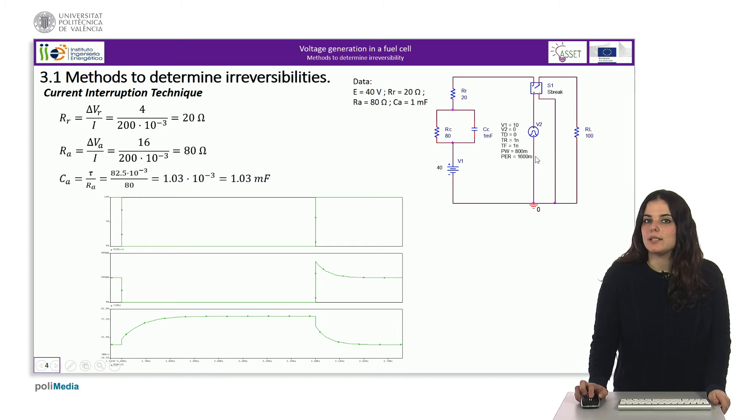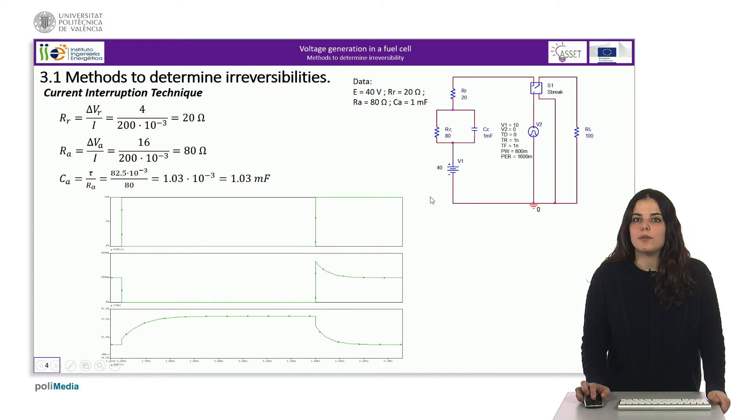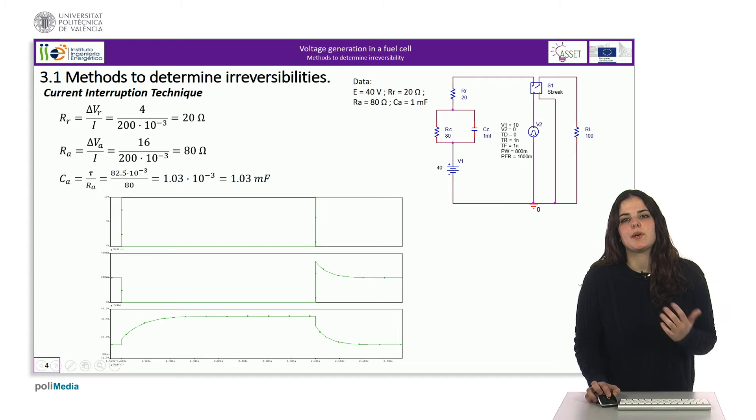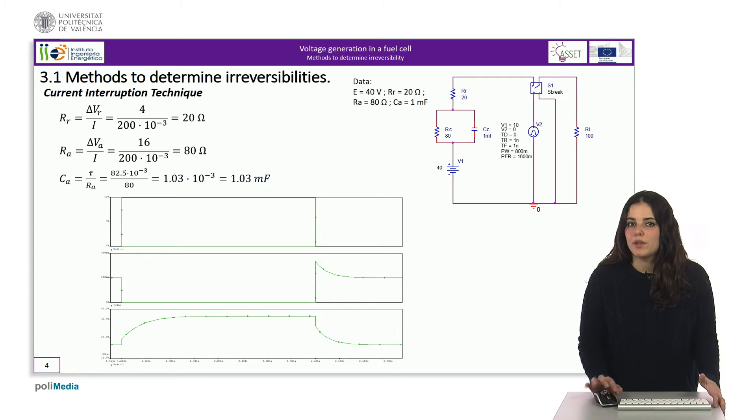In this slide, we can see a simulation made with the ORCAD program of the waveforms of an equivalent circuit. We can therefore see the values of the components of the model and the result of applying the calculation procedure described above. As it can be seen, the values obtained are very close to the real value, although as it is a graphic method, it presents some discrepancies, especially in the calculation of the capacitor.